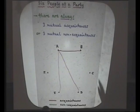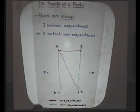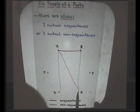How about B and D? Do they know each other? If they do, we have a red triangle and we're done. So we can assume they don't know each other. How about D and E? Do they know each other? If they do, we have a red triangle, so we assume they don't.